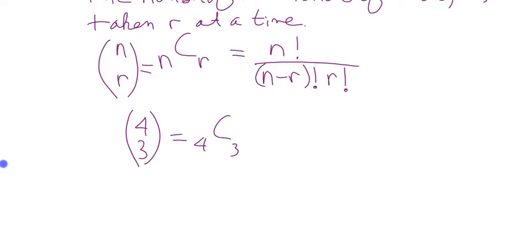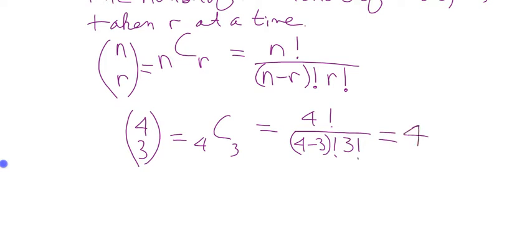4 written over 3 in bracket notation means 4C3 — that's the same notation as in your calculator. I use the word 'choose' for C. So 4 choose 3 means: I've got a set of 4 objects, I want to take them 3 at a time — how many ways can I do that when I don't care about order? That equals 4! over (4−3)! × 3! = 4!/1!×3! = 4.